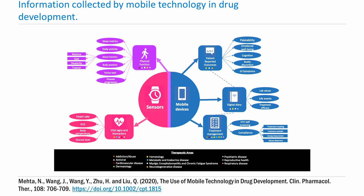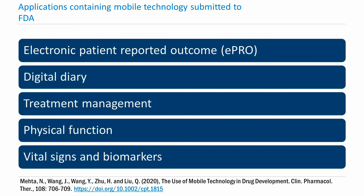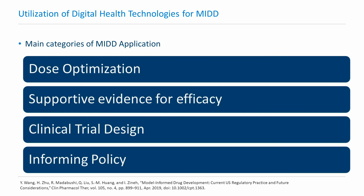There are a number of technologies being utilized for therapy development. The technology landscape is very diverse and is evolving at a rapid pace. These technological innovations can have applicability in a number of therapeutic areas, including neurodegenerative or cardiovascular diseases. According to Mehta et al., some of the applications containing mobile technologies submitted to FDA include electronic patient reported outcomes, digital diaries, treatment management, physical functions, and vital signs and biomarkers. According to Wang et al., model-informed drug development approaches can be applied for four main categories: dose optimization, supportive evidence for efficacy, clinical trial design, and informing policy.